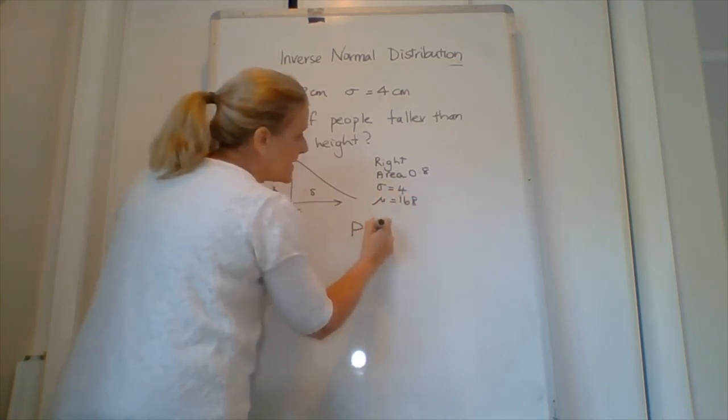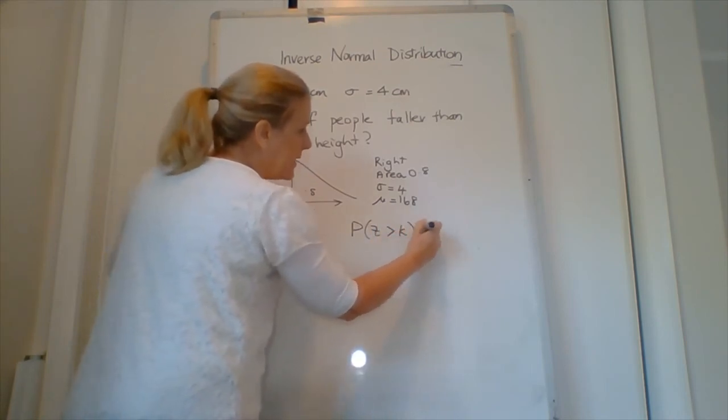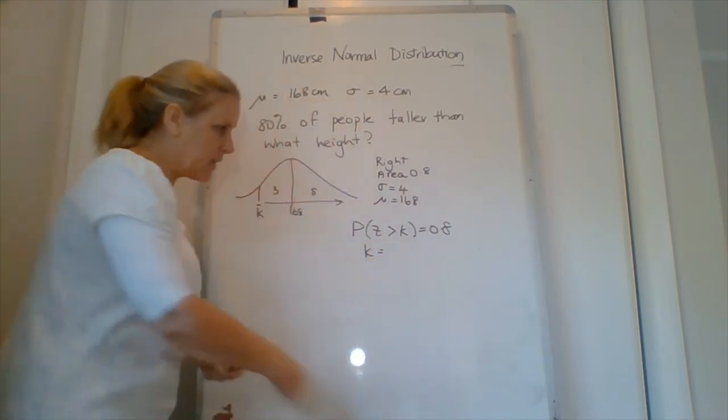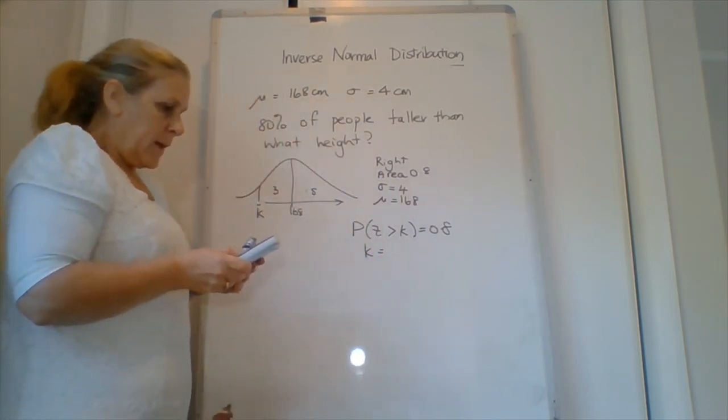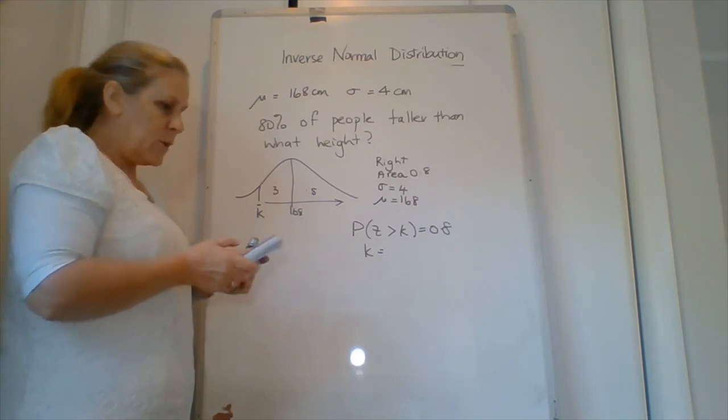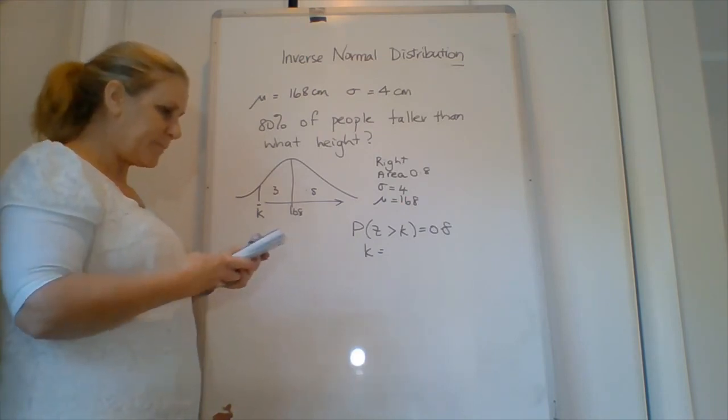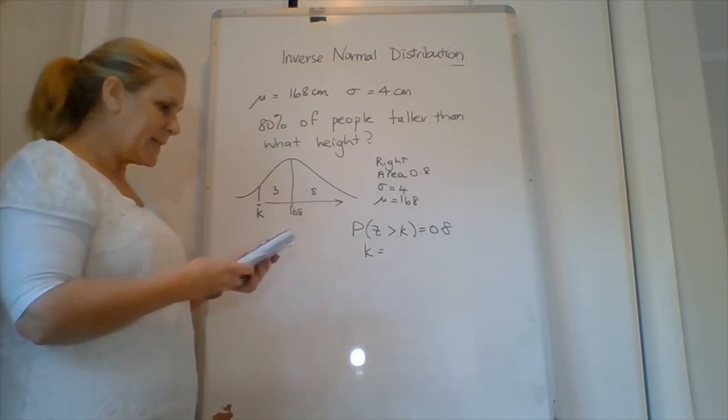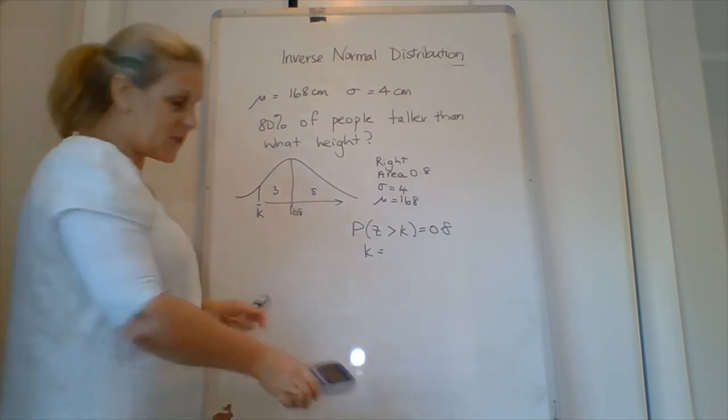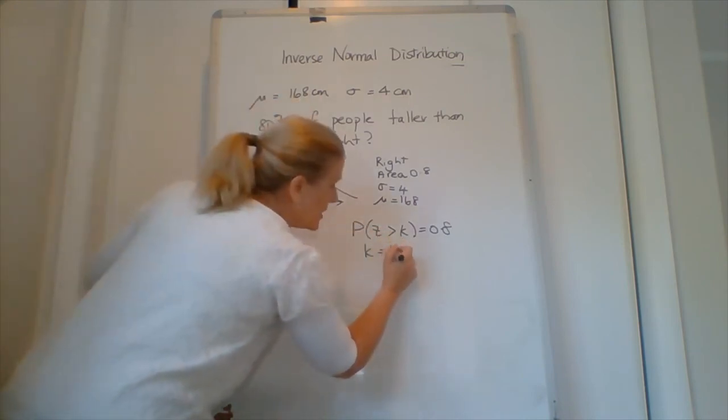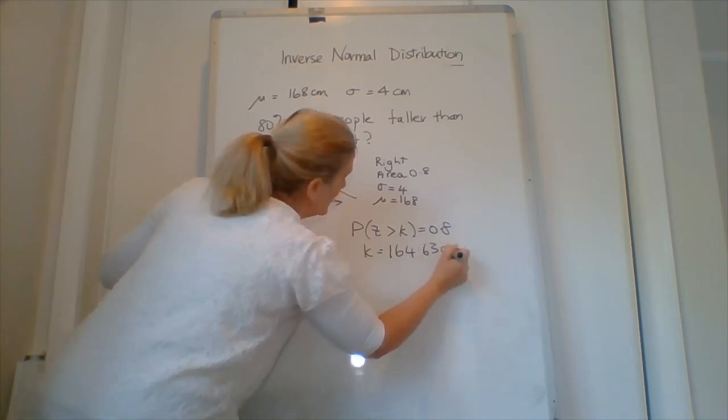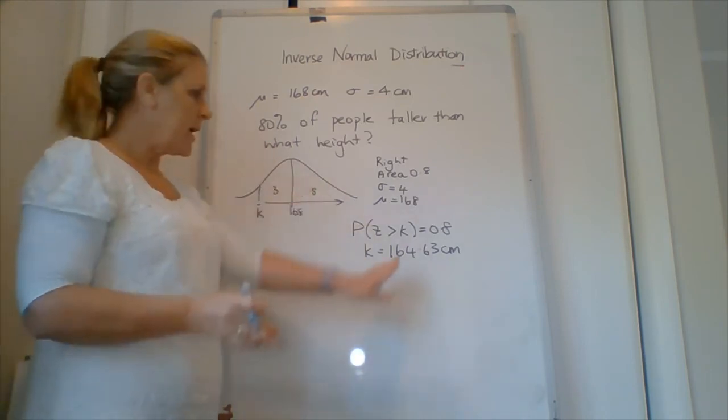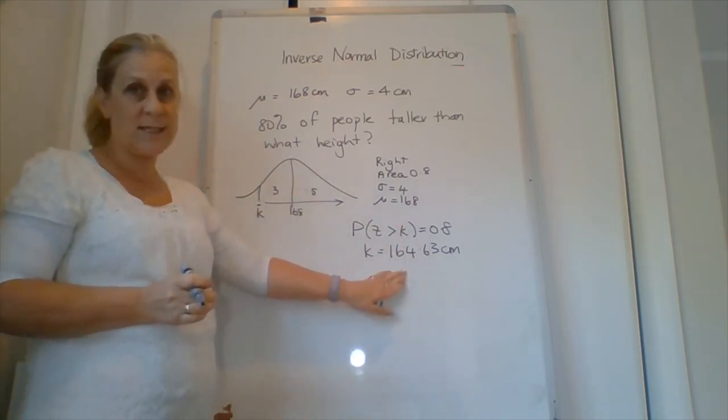So the probability that somebody is taller than k equaling 0.8 happens when k is what? So we put it in. Right-hand tail area is 0.8. Standard deviation of 4. 168. It's 164.63. 164.63 centimeters. So 80% of the group of people is going to be taller than 164.63 centimeters.